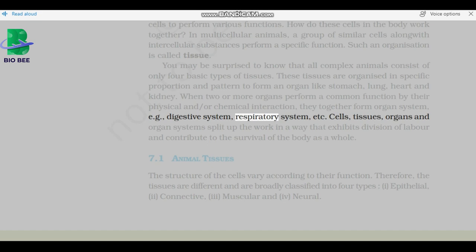Cells, tissues, organs and organ systems split up the work in a way that exhibits division of labor and contribute to the survival of the body as a whole. Animal tissues: The structure of the cells vary according to their function. Therefore, the tissues are different and are broadly classified into four types: epithelial, connective, muscular, and neural.